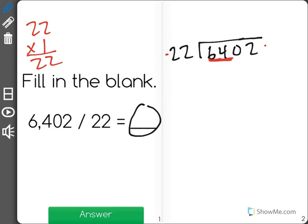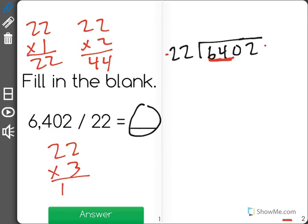Now we move to the 4. How many groups of 22 can we fit in 64? Well, one group of 22 is 22, two groups would be 44, and three groups—I'll just write this down here—three groups would be 66.